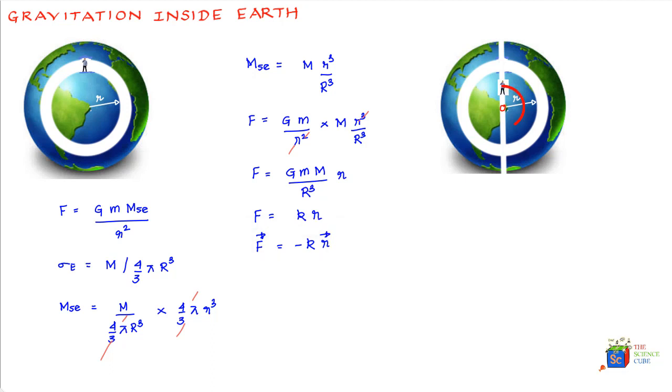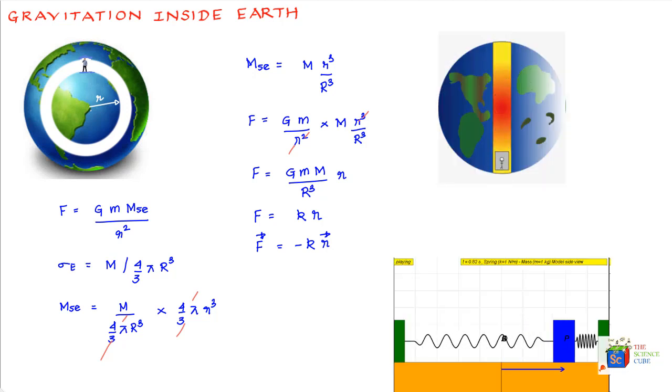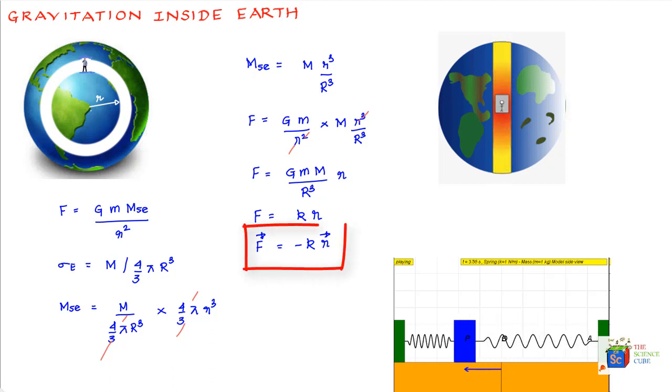So you would tend to oscillate like a block on spring about the center of the Earth that would be the mean position.